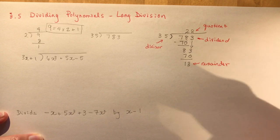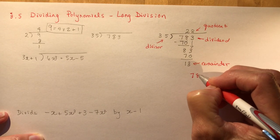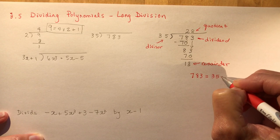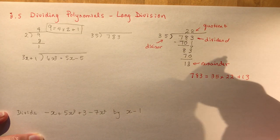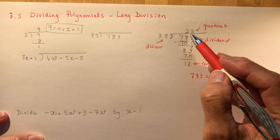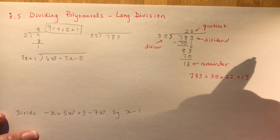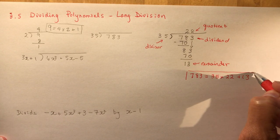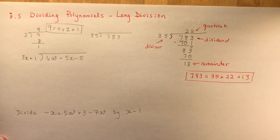So I can write: 783 equals 35 times 22 plus 13. Or you might write it as 22 and 13 over 35. But this division statement format is what we're going to use for polynomials, so I want you to think of it that way.